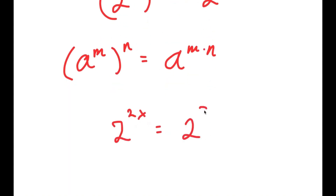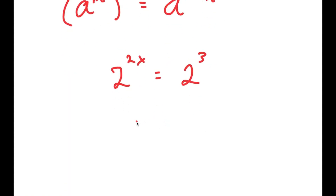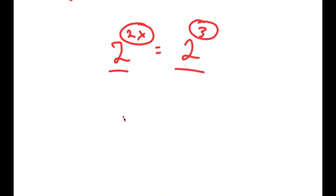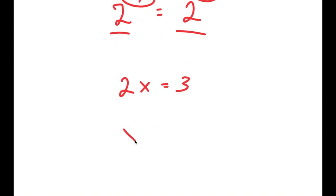So I get 2 to the power of 2x is equal to 2 to the power of 3. And because these two have the same bases, these exponents are equal to each other. So 2x is equal to 3, and x is equal to 3 over 2.